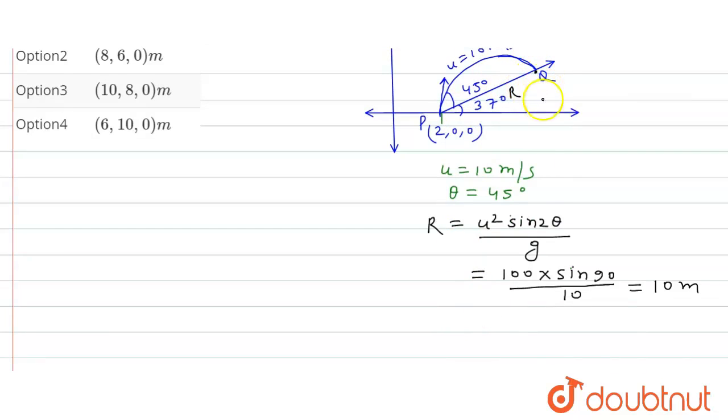The coordinates of point Q: x-coordinate will be 2 plus R cos(37°), y-coordinate will be R sin(37°), and z-coordinate is 0. So from here, this will be 2 plus R value 10 times cos(37°).